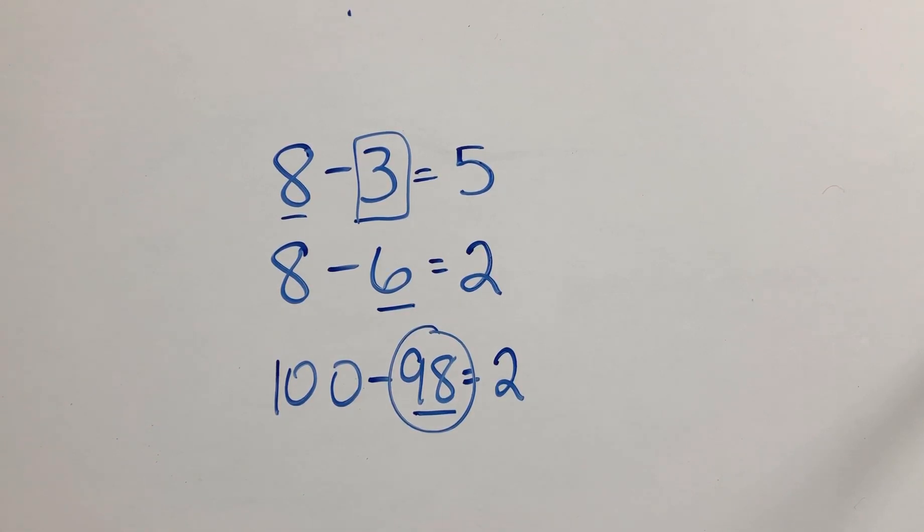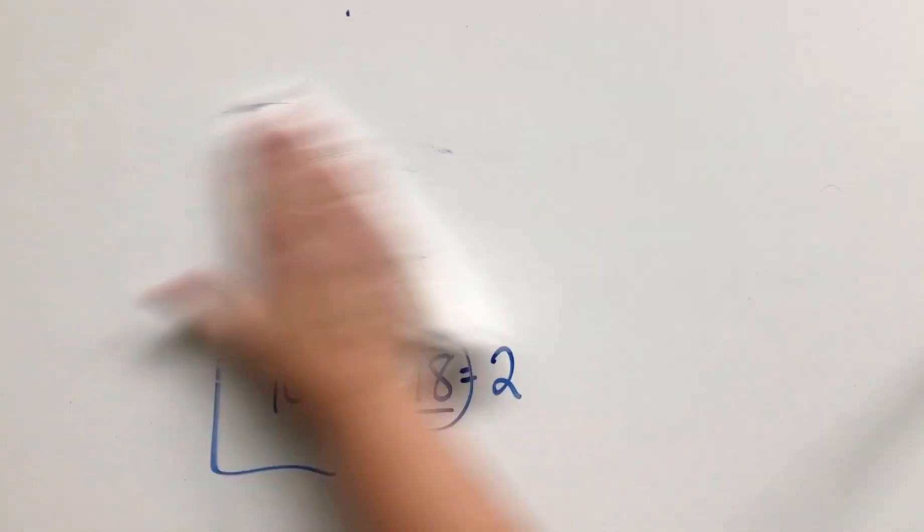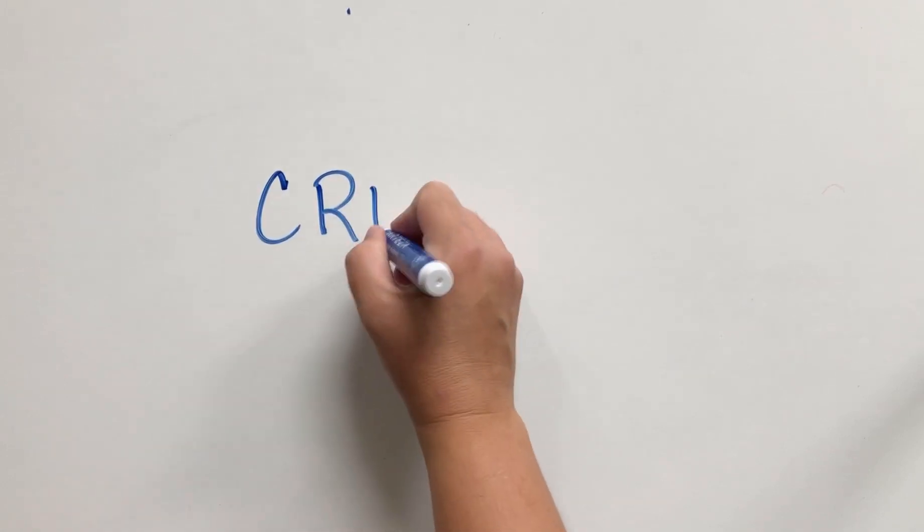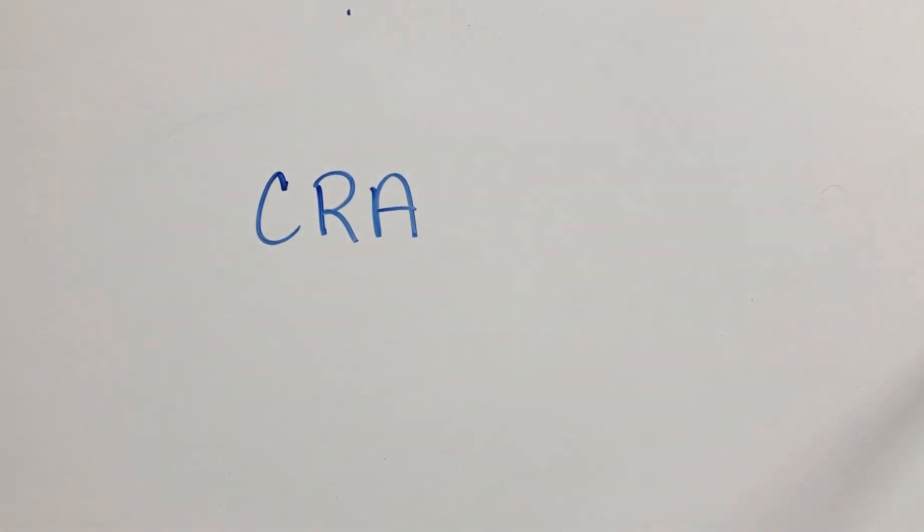Now, we don't want to start our strategy instruction or modeling with this kind of abstract representation. I just want to talk briefly about the CRA model, which if you've watched my other videos, you are already familiar with. The CRA model is an approach to teaching math.